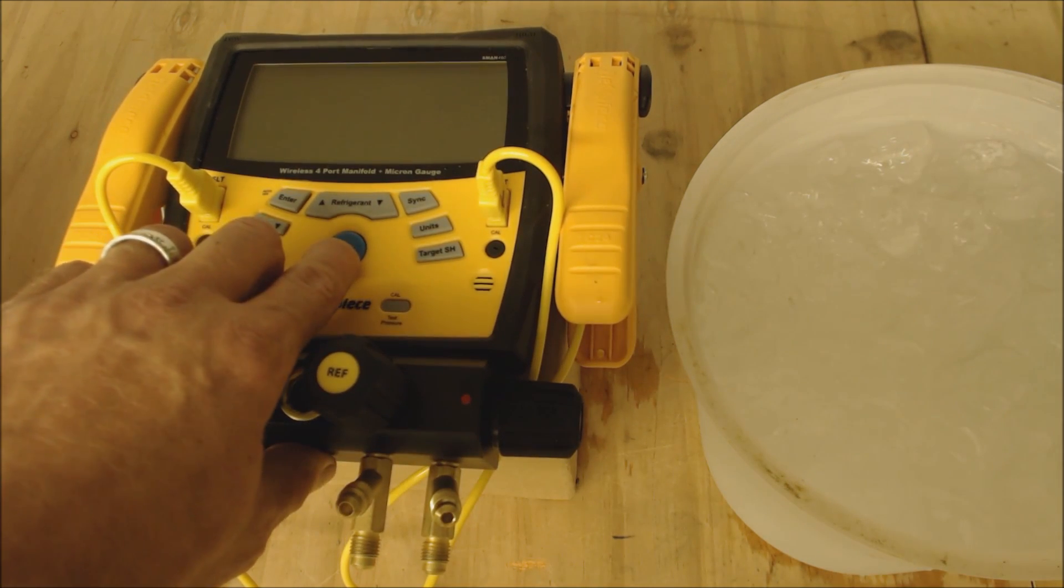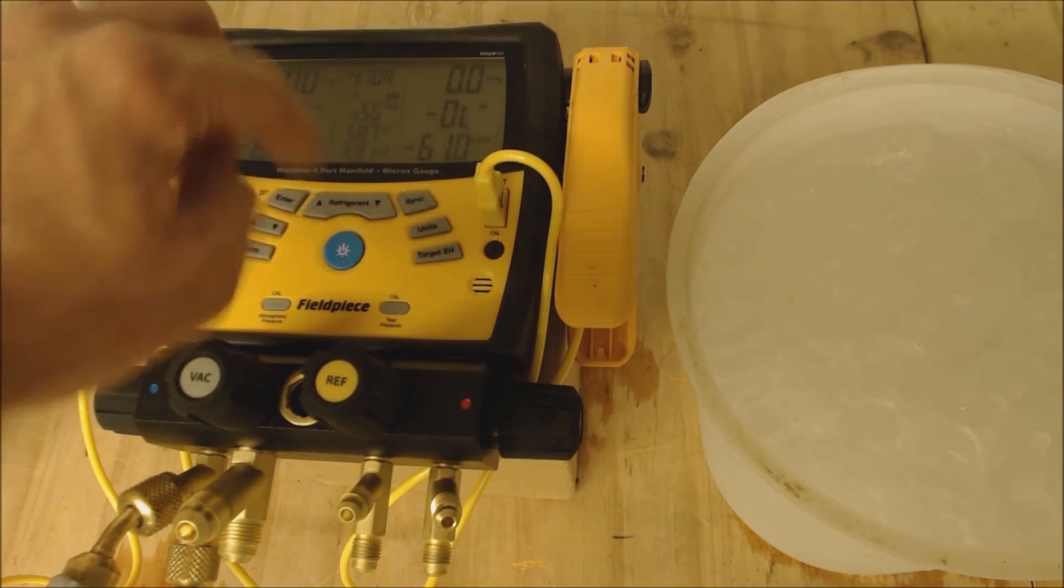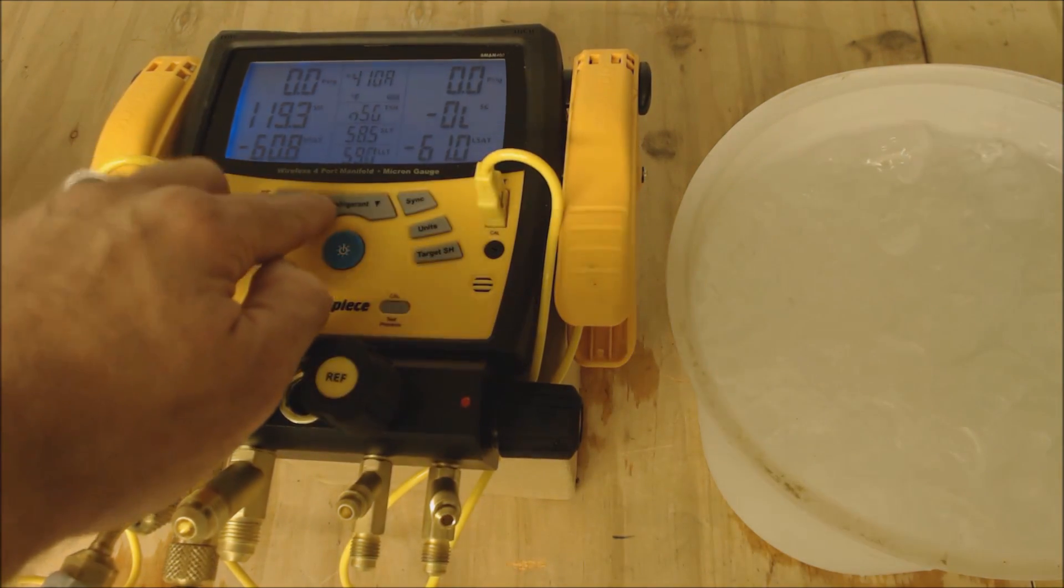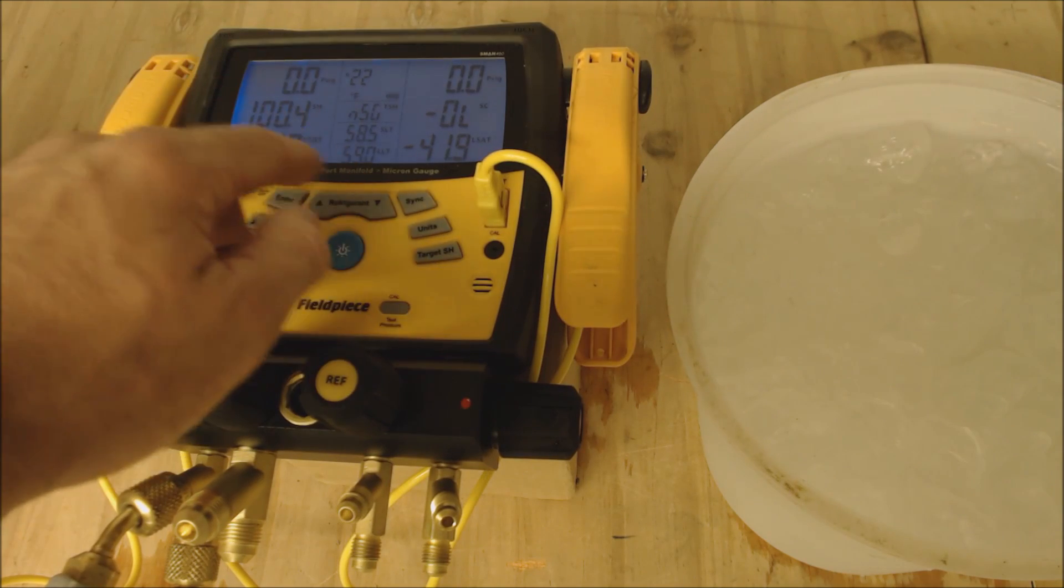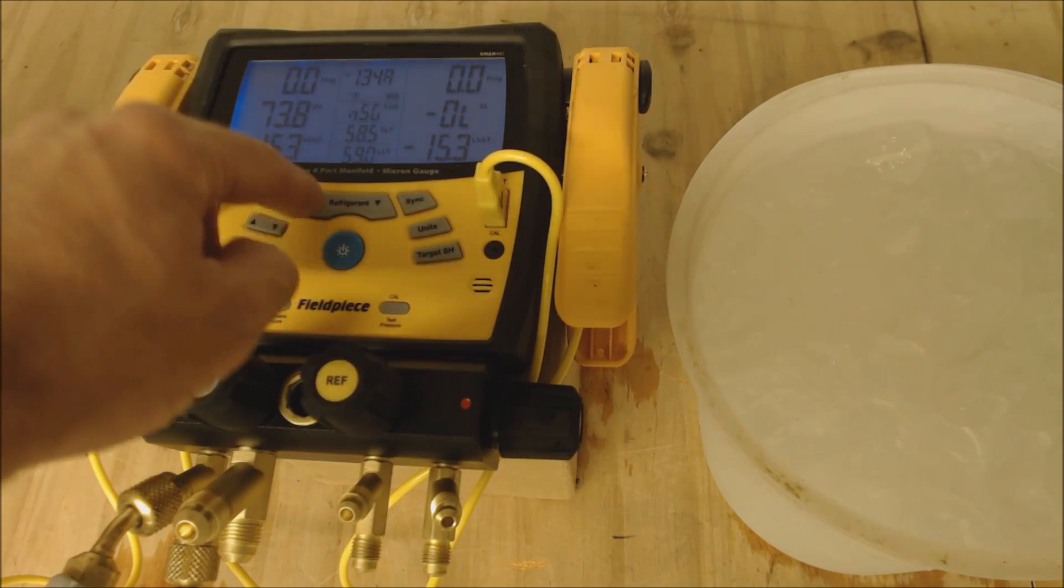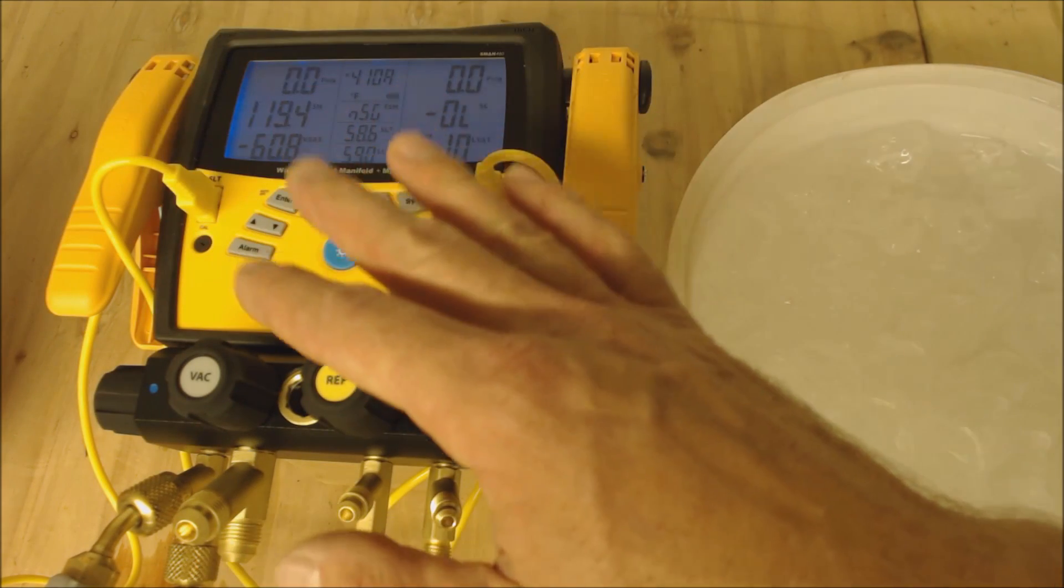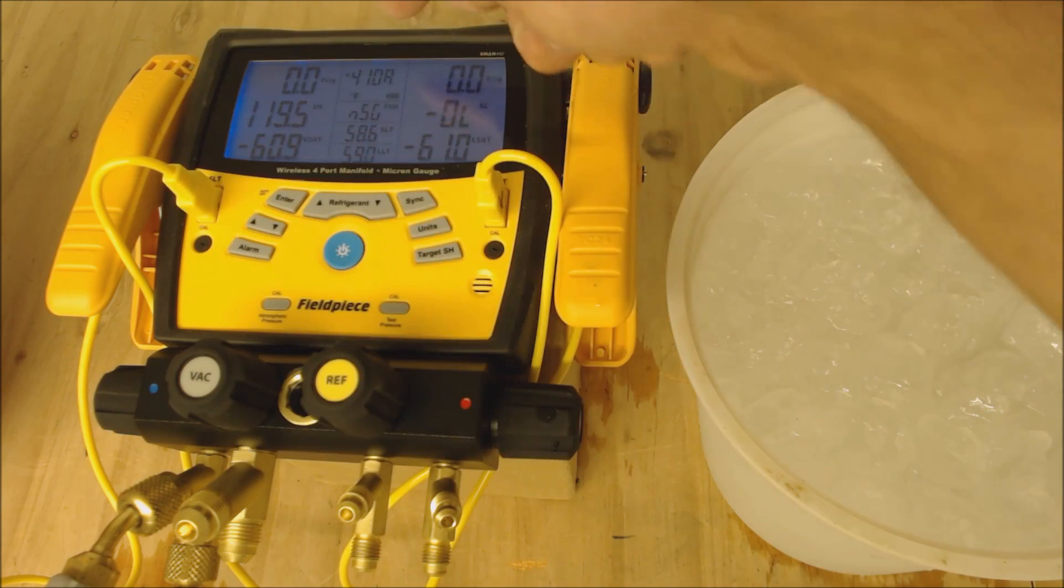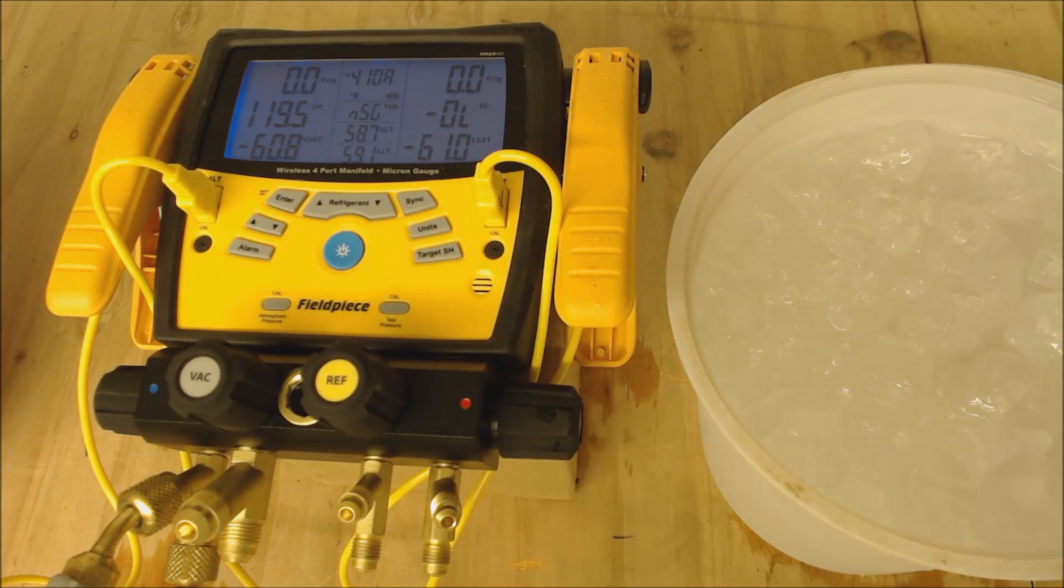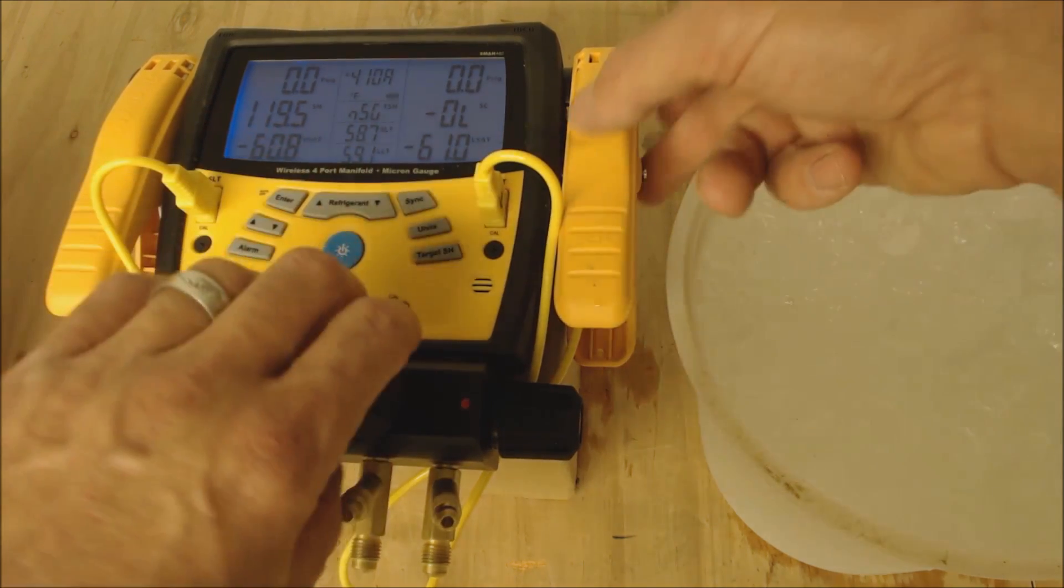We're going to turn it on. Right here it says R410A refrigerant. If you go up you can select whatever other refrigerants you want, like R22. We're just going to stick with R410A refrigerant. That's the one we left off with last, so it's the first one that will appear. You see your liquid line temperature here is reading 59.1 degrees.